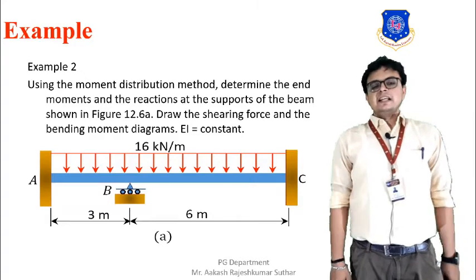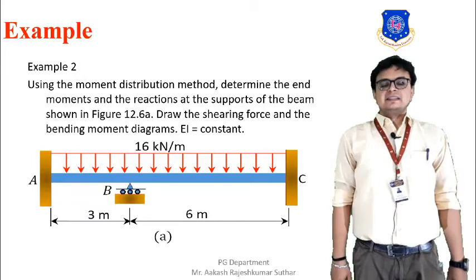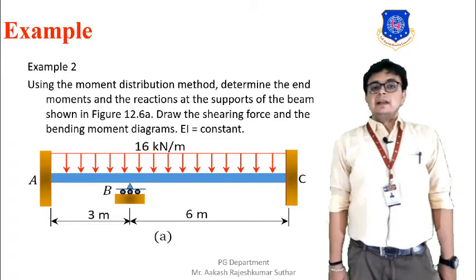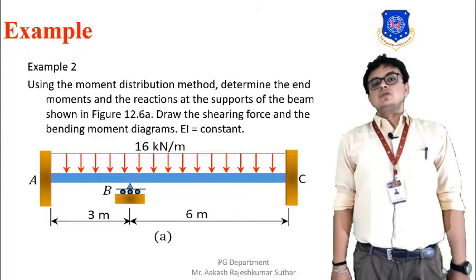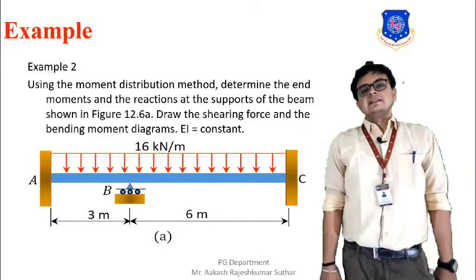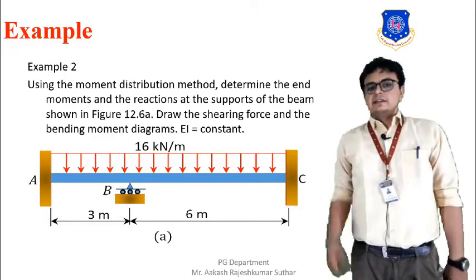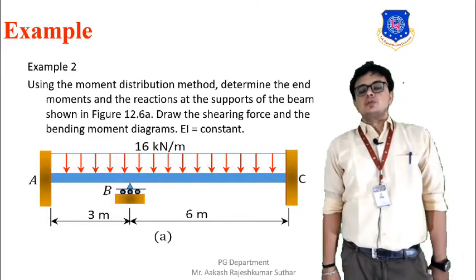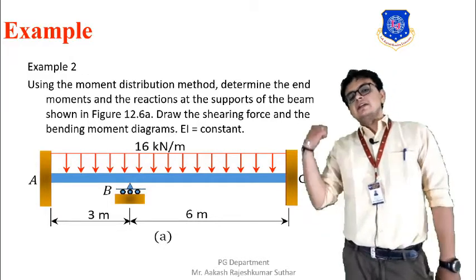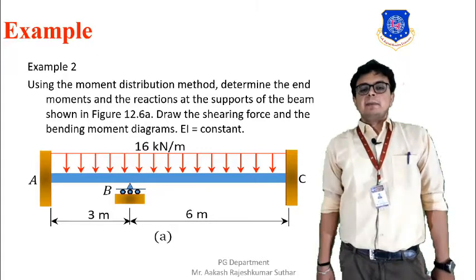Welcome students to our online session. In the previous session, we started the moment distribution method and discussed an example of a beam having three spans and four joints. In today's session, we are going to see example number two. The question is: using the moment distribution method, determine the end moments and reactions at the supports of the beam shown in the figure below, and draw the shear force and bending moment diagram.